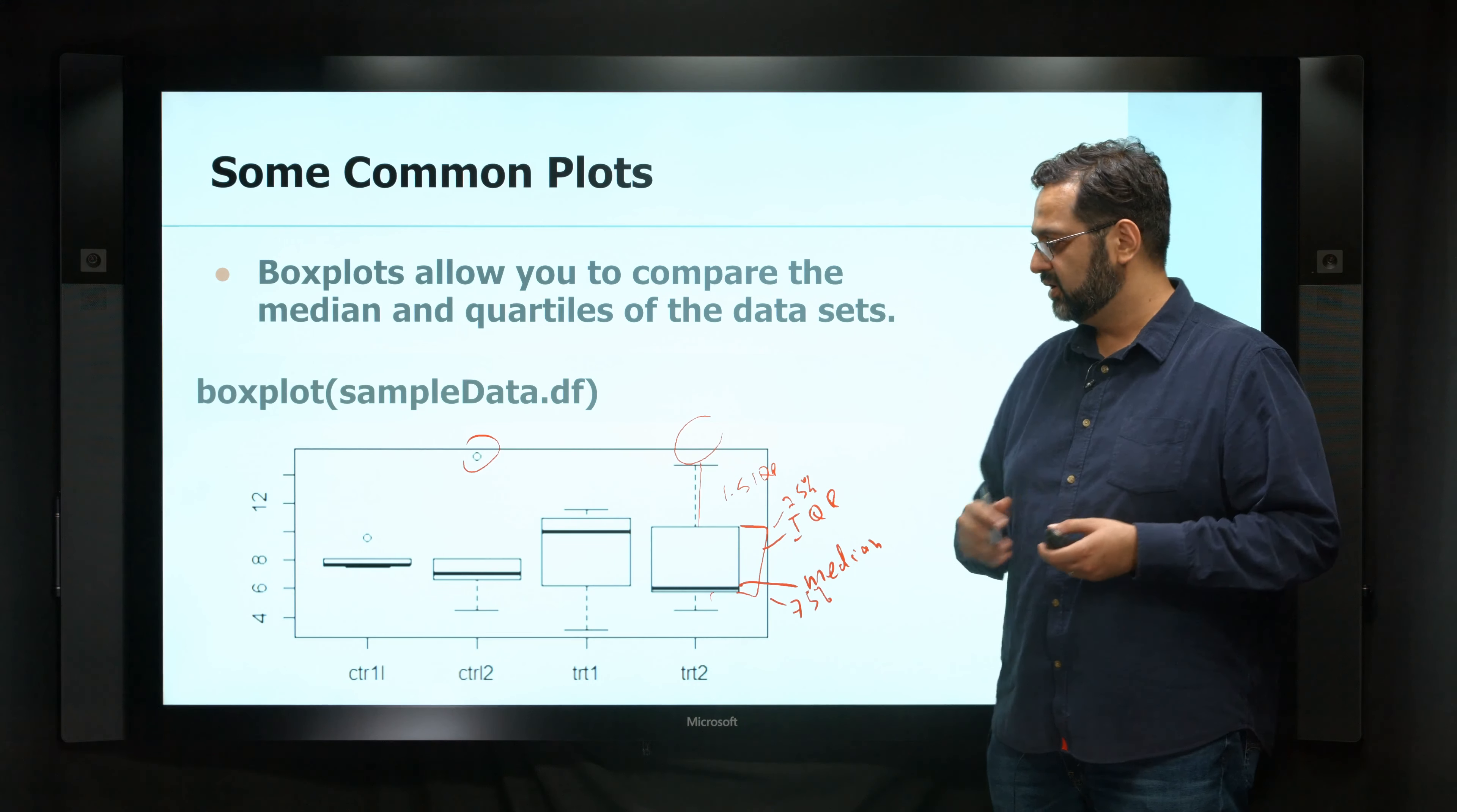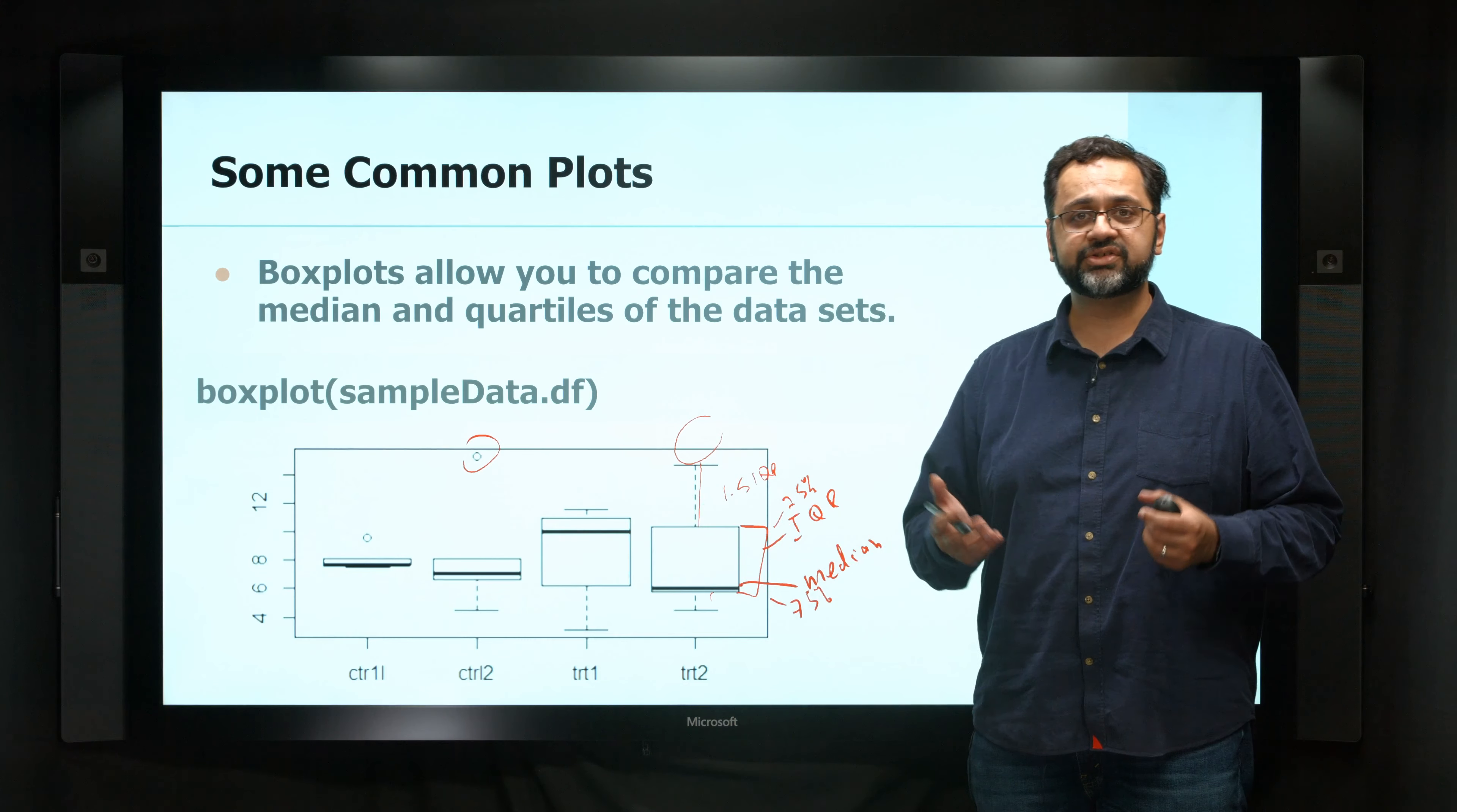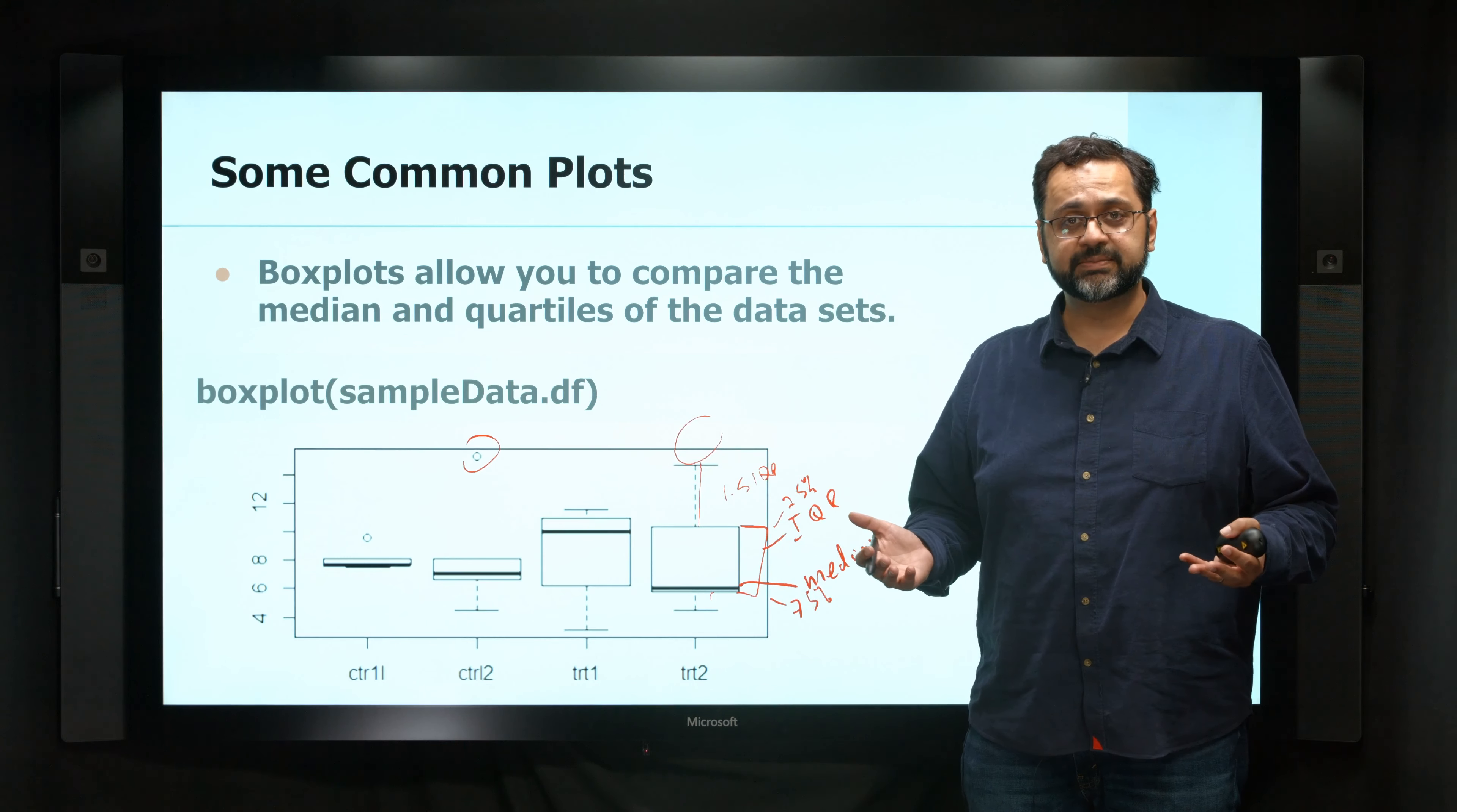So generally this gives you an idea of where the distribution is. It's not the mean. It's actually the median. But this is just a quick way of seeing what kind of values are in the different data sets. So all I had to do was box plot, this data frame, and that was it.